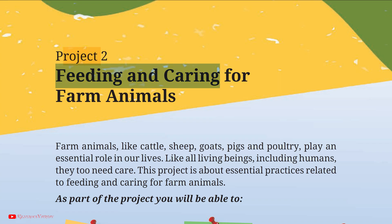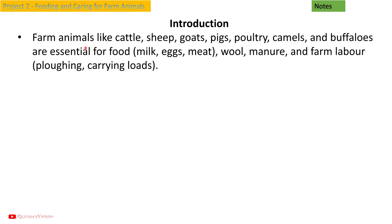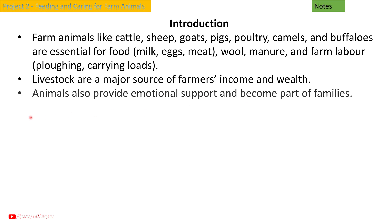Project 2: Feeding and Caring for Farm Animals, from Grade 8 Vocational Education book Kaushal Both. Farm animals like cattle, sheep, goats, pigs, poultry, camels, and buffaloes are essential for food, milk, eggs, meat, wool, manure, and farm labor such as ploughing and carrying loads. Livestock are a major source of farmers' income and wealth, and animals also provide emotional support and become part of families.